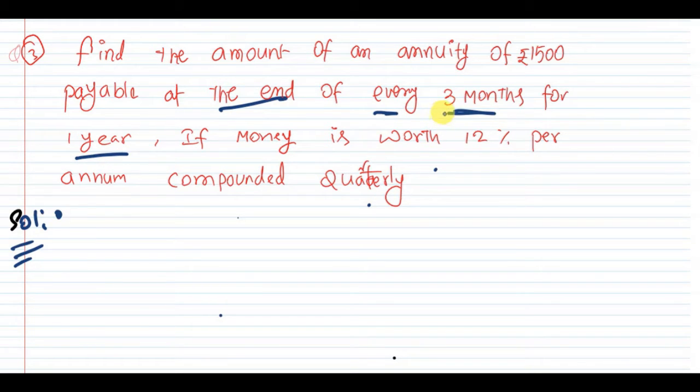If money is worth 12% per annum, compounded quarterly. In some questions this word doesn't exist, then you should understand after reading the entire question. And at the end, this word indicates that it is a regular payment.